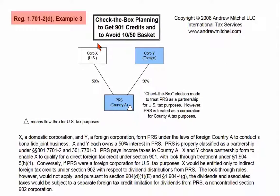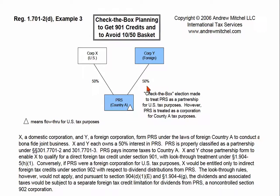In Example 3 of Regulation 1.701-2D, Corp X, a U.S. corporation, owned 50% of PRS, a foreign entity. The other 50% of PRS was owned by Corp Y, a foreign corporation.